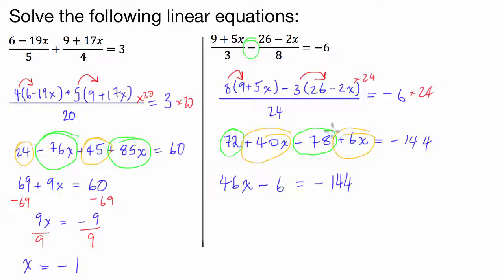So what I'm going to do is add 6 to both sides. And I've got 46x is equal to negative 138. And then I'm going to divide both sides by 46. And I'm left with x is equal to negative 3. Cool.